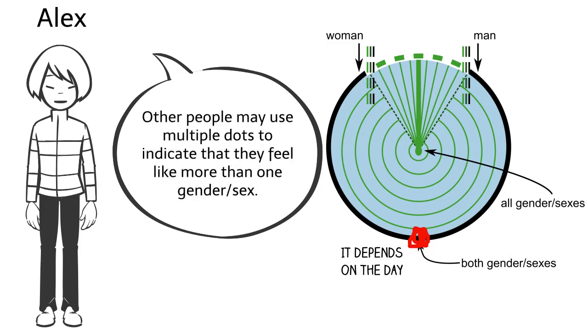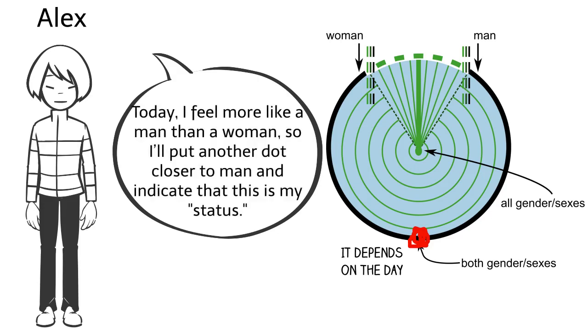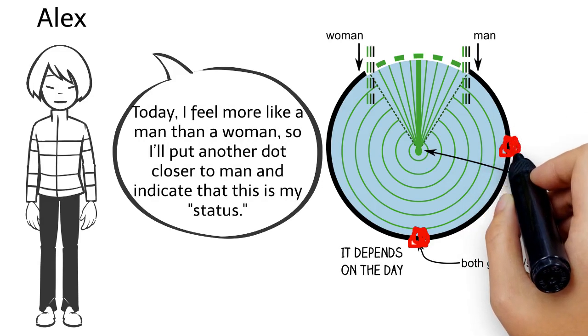Other people may use multiple dots to indicate that they feel like more than one gender sex. Today I feel more like a man than a woman, so I'll put another dot closer to man and indicate that this is my status.